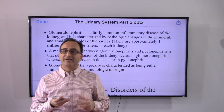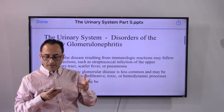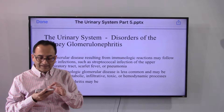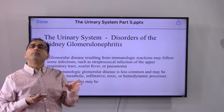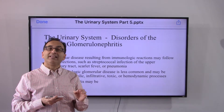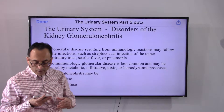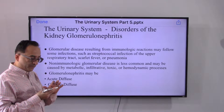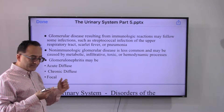Glomerulonephritis is characterized as being either immunologic or non-immunologic in origin. Immunologic origin means the immune system is compromised, leading to conditions like fever, pneumonia, or upper respiratory tract infections. Non-immunological glomerular disease is less common and may be caused by metabolic, infiltrative, toxic, or hemodynamic processes.